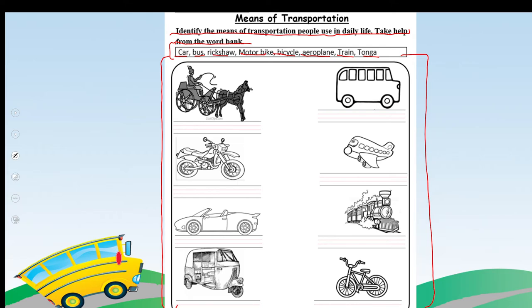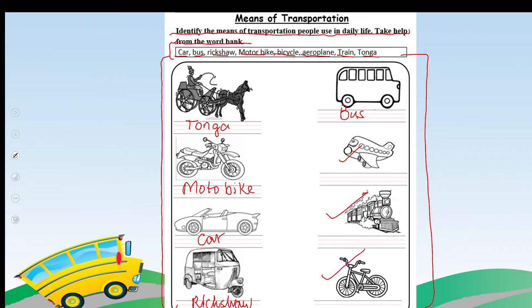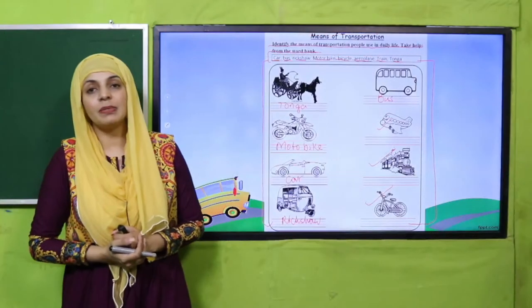First one: a horse with a cart behind it — it is a tonga, very good! The second one is a bus, very good! Then a motorbike, then a car, rickshaw, then aeroplane, train, and bicycle. Pause the video and quickly complete the worksheet.